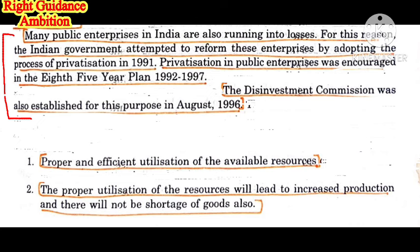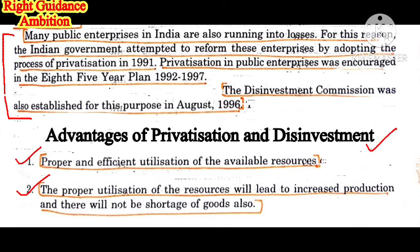Privatization in public enterprises was encouraged in the 8th Five-Year Plan from 1992 to 1997. At that time the Prime Minister was P.V. Narasimha Rao and the Finance Minister was Manmohan Singh. The government made a separate committee for checking the improvement of public enterprises, around 1996, to assess what positive growth had happened through privatization and disinvestment.